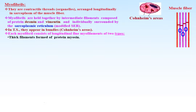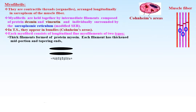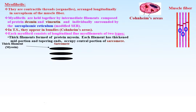Each myofibril consists of longitudinal fine myofilaments of two types. Thick filaments are formed of protein myosin; each filament is one and a half microns long with a thickened mid-portion and tapering ends. They occupy the central portion of the sarcomere, which is the functional unit of the muscle fiber. Thin filaments are formed mainly of actin and regulatory proteins — tropomyosin and troponin — which regulate actin and myosin binding.